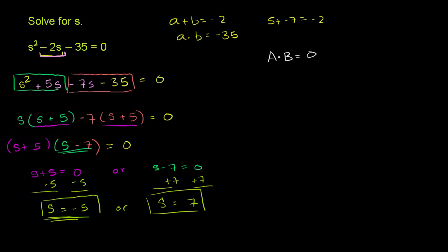Now, I mentioned there's an easier way to do it. And when you have something like this, where you have 1 as the leading coefficient, you don't have to do this two-step factoring. Let me just show you an example. If I just have x plus a times x plus b, what is that equal to?